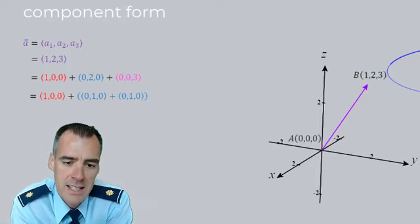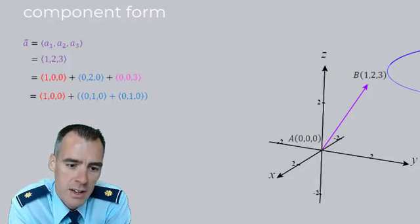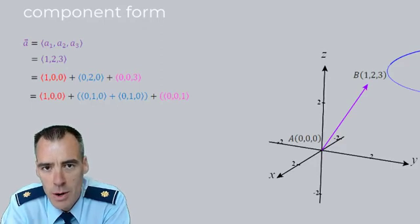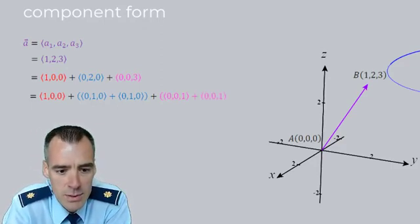And take that last vector, (0, 0, 3), we could decompose that into three different vectors: (0, 0, 1) plus (0, 0, 1) plus (0, 0, 1). Now why would we do that? Well, just bear with me a second because we're going somewhere.